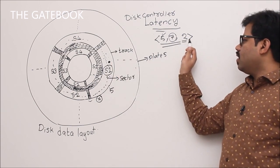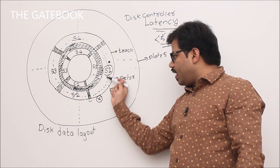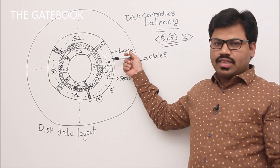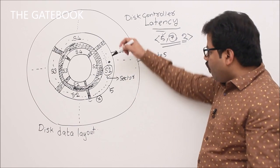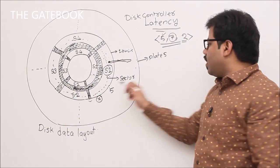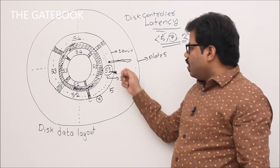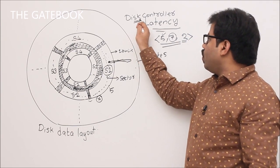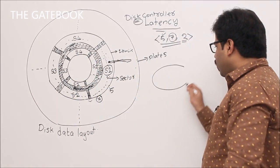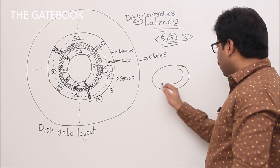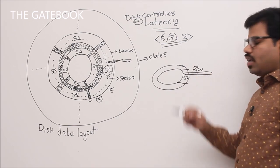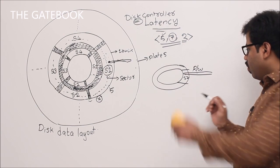Once the read/write head reaches the right track, it may not yet be at the desired sector. Rather than moving the head sideways, the disk is designed so that the plate rotates — bringing the right sector under the read/write head. So the plate rotates until sector 2, for example, comes under the head. That is the final picture before data can be stored.